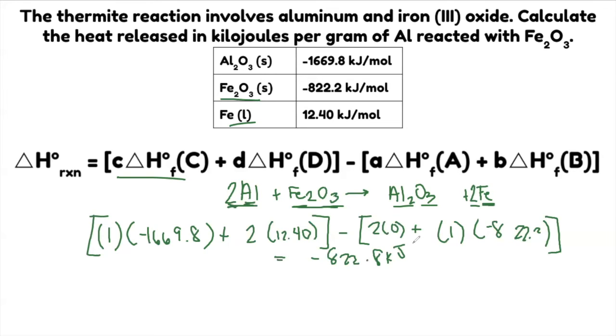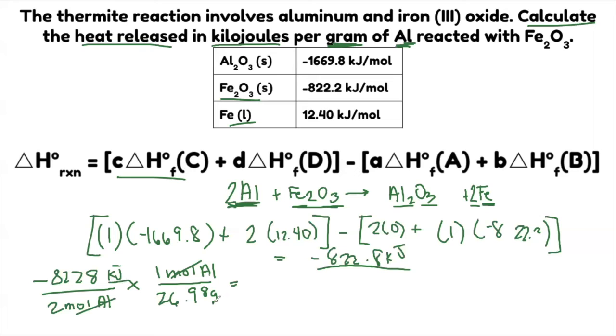So this is the heat of the reaction. However, we are asked to calculate the heat released in kilojoules per gram of aluminum. So this one is actually for 2 moles of aluminum. You can write negative 822.8 kilojoules over 2 moles of aluminum. Then we need to get the gram. So we need to multiply this by its molar mass. This is 1 mole aluminum. The molar mass of aluminum from your periodic table is 26.98 grams. Some books will say 27, so it's fine. Cancel the moles. You will get kilojoules per gram, and this is equal to negative 15.25 kilojoules per gram. So this is our final answer.